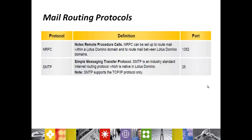Mail Routing Protocol. Basically we have two different types of mail routing protocols in the Domino environment: NRPC or SMTP. NRPC, we call it Notes Remote Procedure Call. It can be set up to route mail within a Lotus Domino domain and to route mail between Lotus Domino domains. If you want to set up Lotus Notes mail routing within your Lotus Notes environment, the protocol used will be NRPC. The port number is 1352.